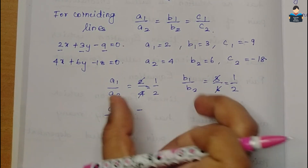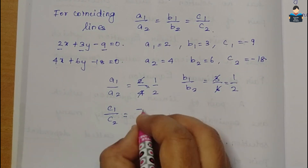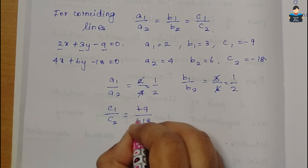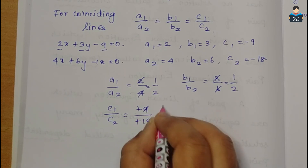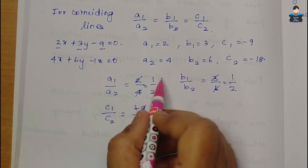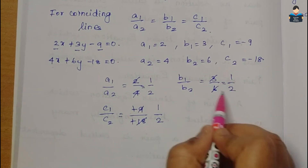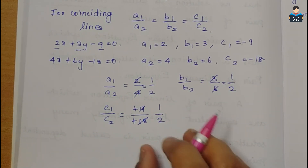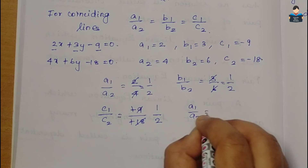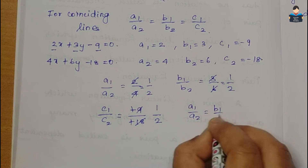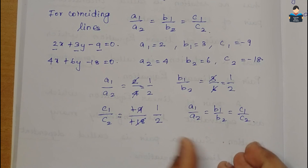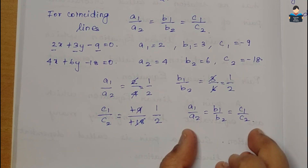The condition is correct. Now c1/c2: minus 9 by minus 18. The two negatives cancel, giving 9 by 18, which simplifies to 1 by 2. So a1/a2 = b1/b2 = c1/c2 = 1/2. This condition is satisfied, confirming these are coinciding lines.